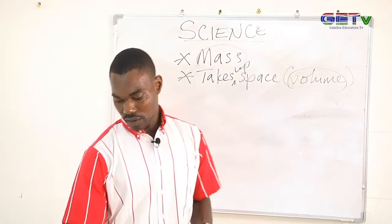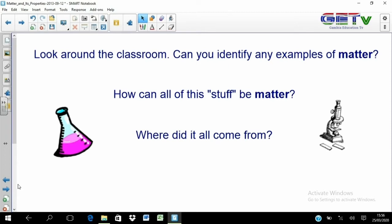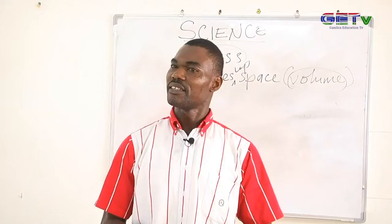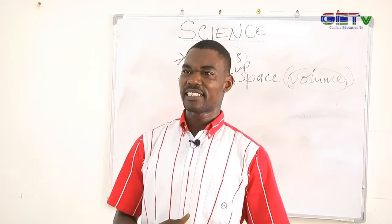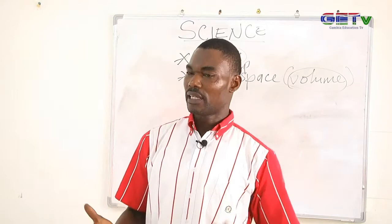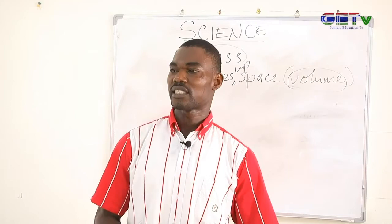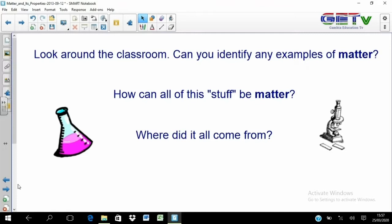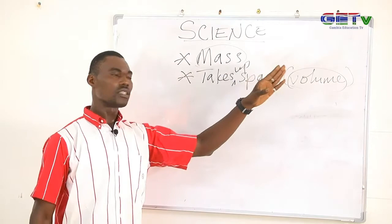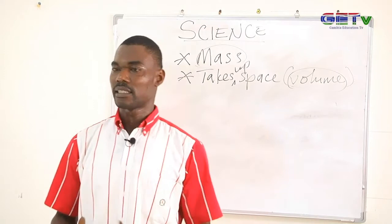Look around your environment and classify anything you see as matter or not. Everything around you — the air, tables, chairs, beds, clothes, shoes — is all matter. The reason every substance is matter is because every substance has mass and every substance takes up space. That is why every substance is matter.